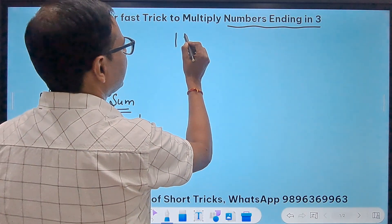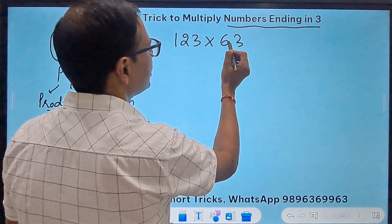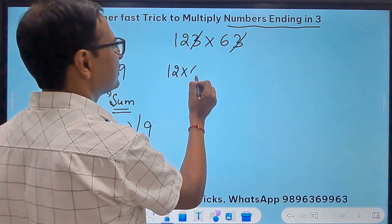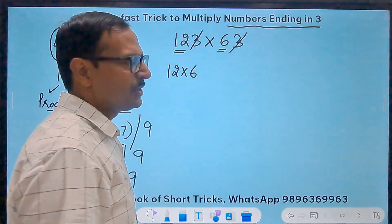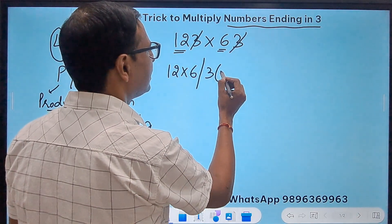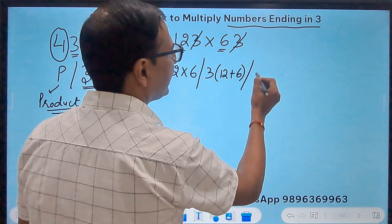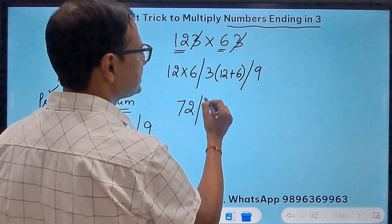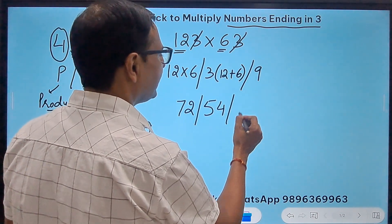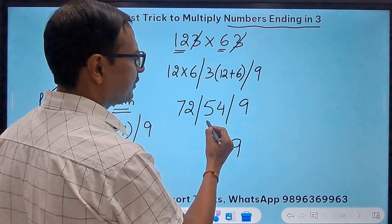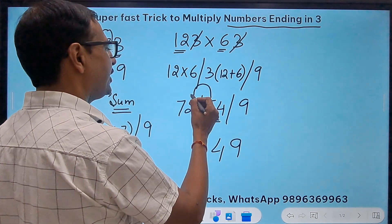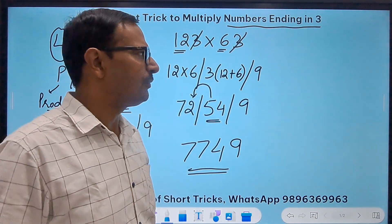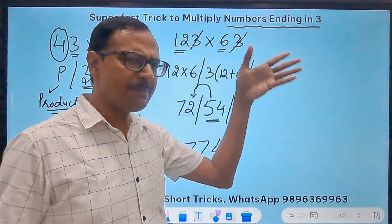Let's take 123 times 63. So forget the 3s. I want the product, that is 12 times 6. The remaining numbers are 12 and 6, right? So 12 times 6, then I need 3 times 12 plus 6, the sum, and the 9. This is 72. This is 3 times 18, which is 54, and finally the 9. So 9 is a single digit, 54, 4 retained, 5 carried over here. So 72 plus 5 is 77. And there I get my answer: 7749. 123 times 63. Try it using the traditional approach, I am sure you will say that this method is super quick.